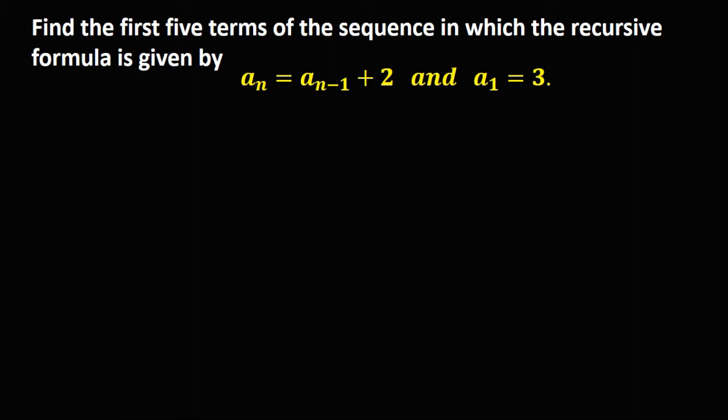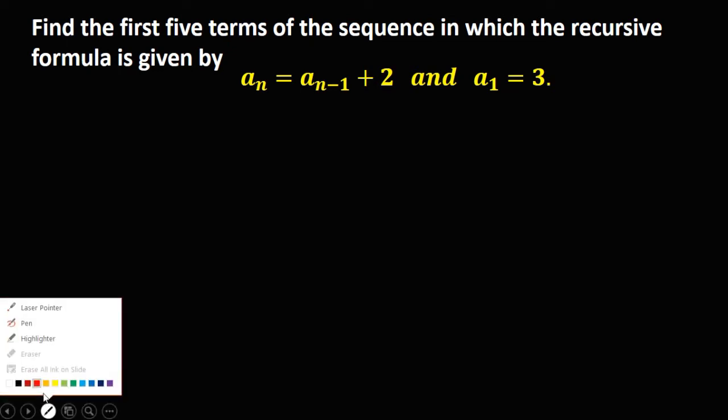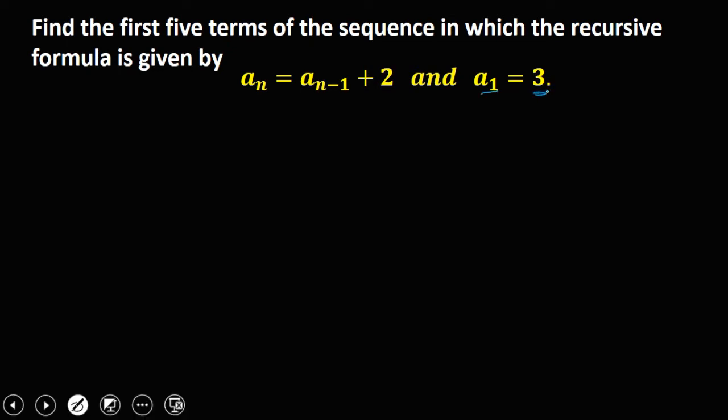Let's solve this problem. Find the first 5 terms of the sequence with the recursive formula: a sub n equals a sub n minus 1 plus 2, and a sub 1 is 3. Since we already have the first term, a sub 1 is equal to 3.